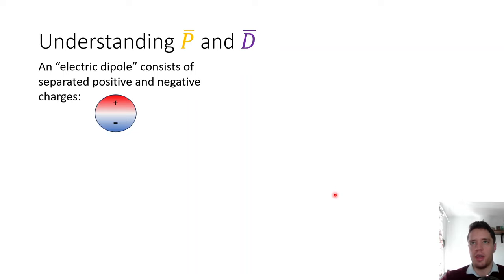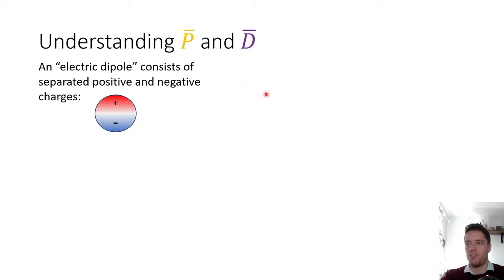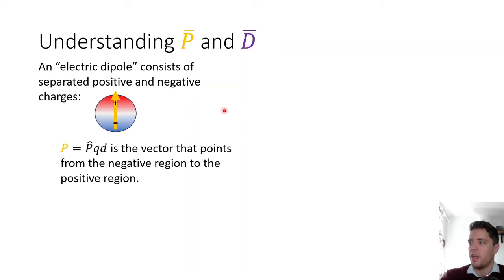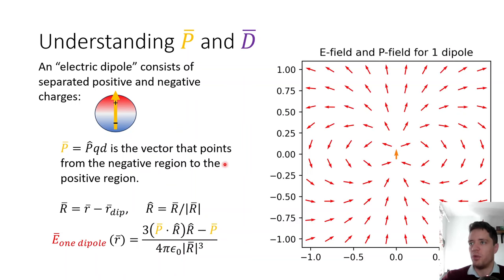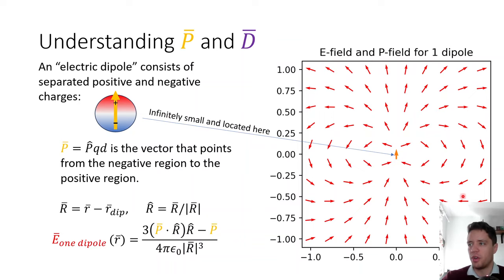Now we're ready to understand the P field and the D field. First, an electric dipole is simply a system where a positive and negative charge are separated by a distance d. We define a p vector oriented from the negative to the positive side with magnitude equal to charge q multiplied by separation d. We can write an expression for the dipole field and graph it — assuming it's infinitesimally small at the center, we get an interesting figure-8 pattern for the electric dipole.